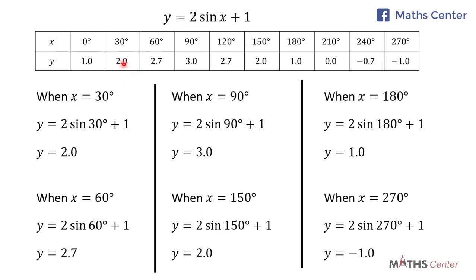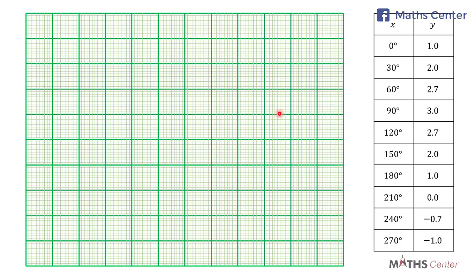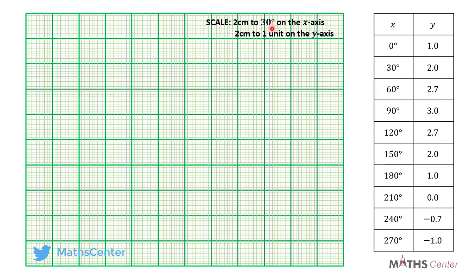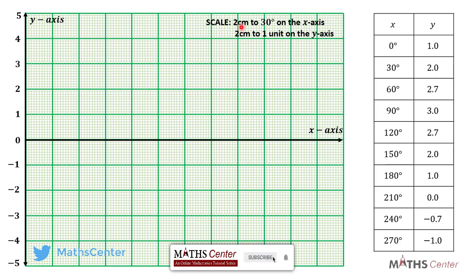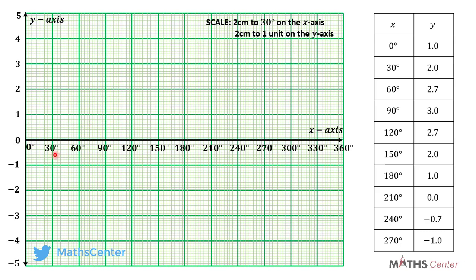The next part says that using the values of x and y in the table, we should draw the graph of the relation y is equal to 2 sin x plus 1. We have the graph sheet here. The question says to use a scale of 2 centimeters to 30 degrees on the x axis and 2 centimeters to 1 unit on the y axis. I'm choosing a vertical major grid line as the y axis and a horizontal major grid line as the x axis.